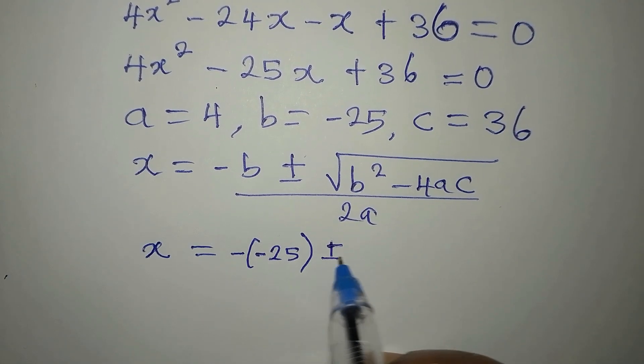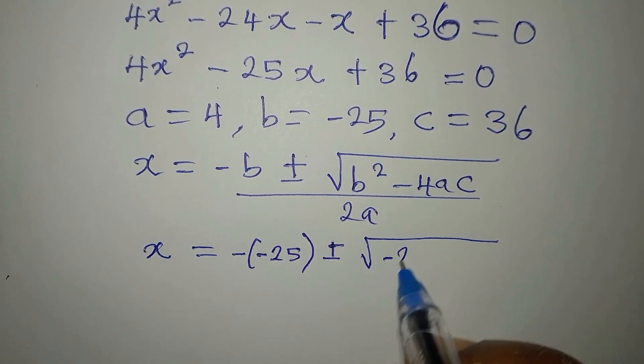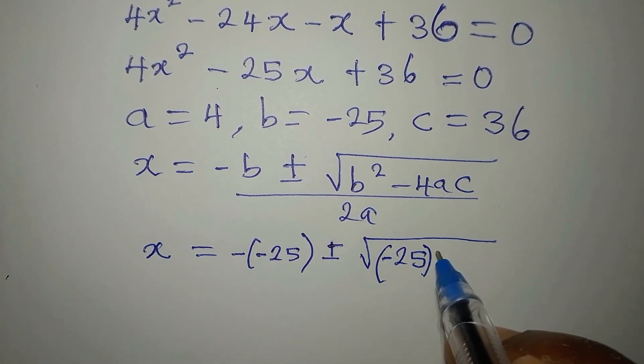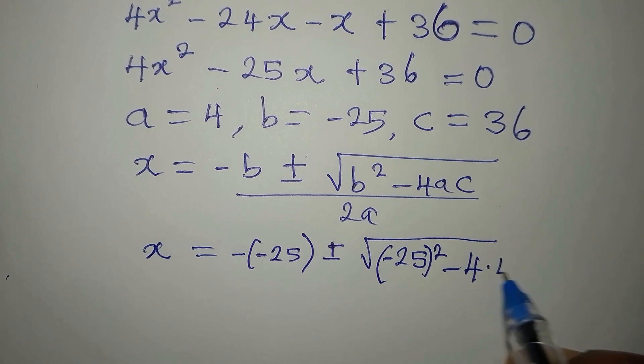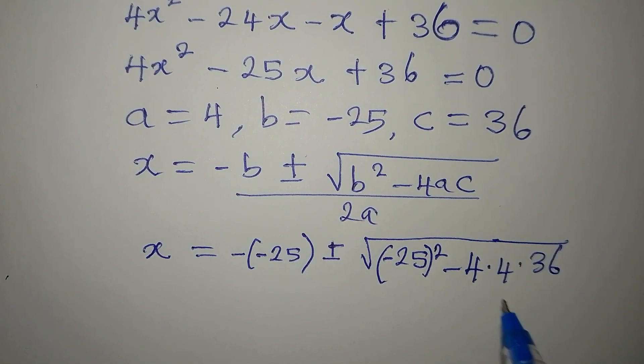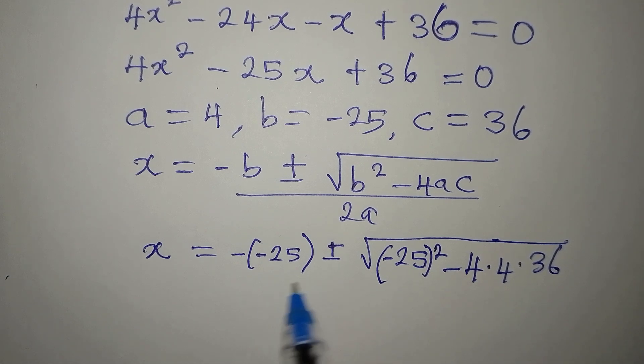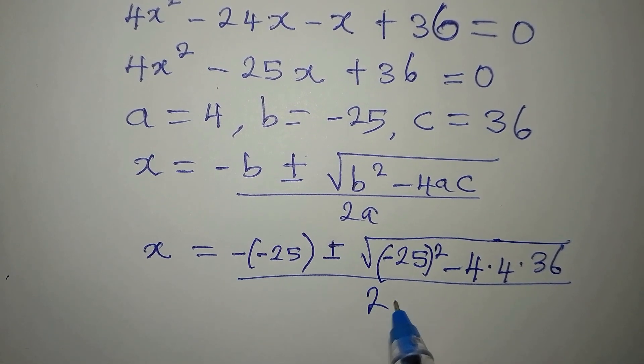Because this negative will come down and B itself is minus 25. Then plus or minus, we have B squared. B squared will be minus 25 squared. Then minus 4 times 4 times 36. Then all of this will be divided by 2 times 4.